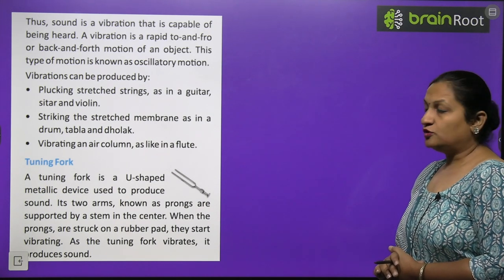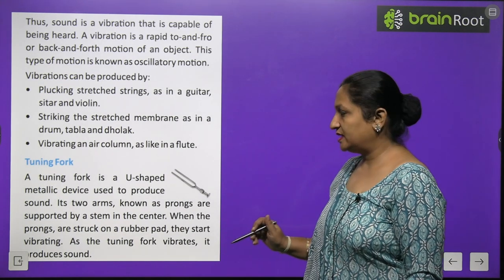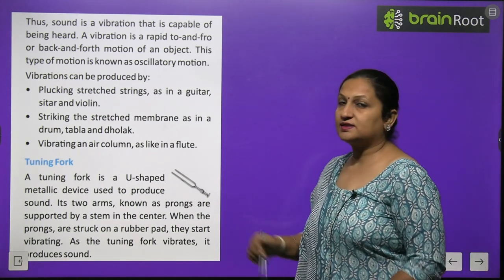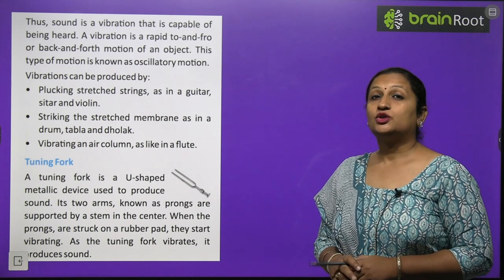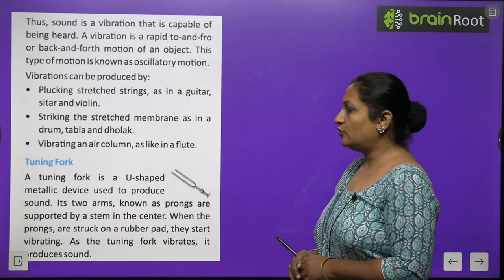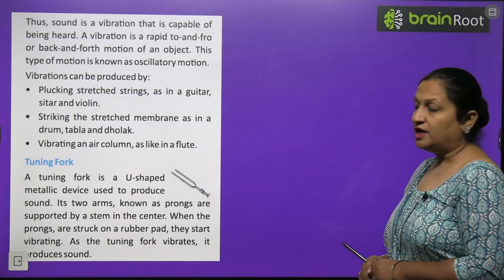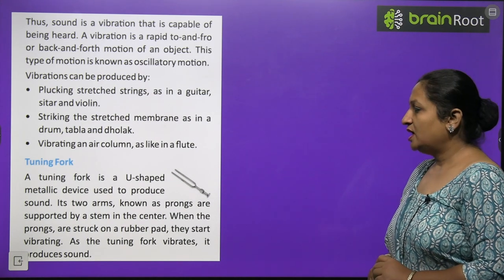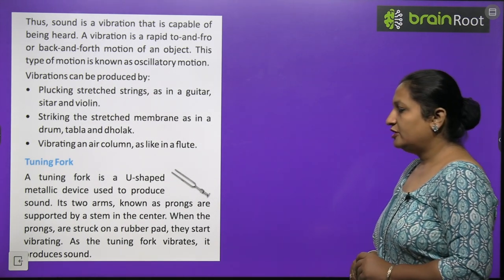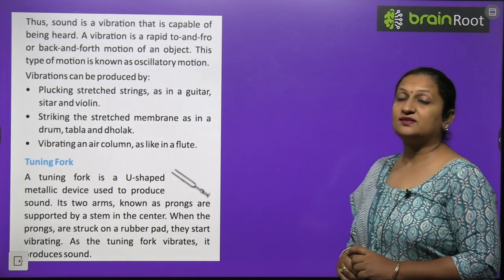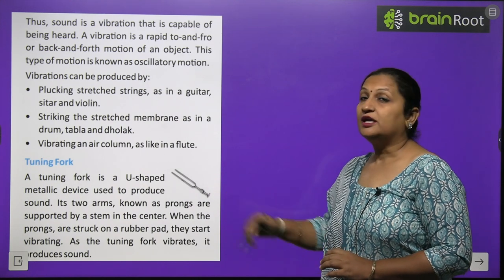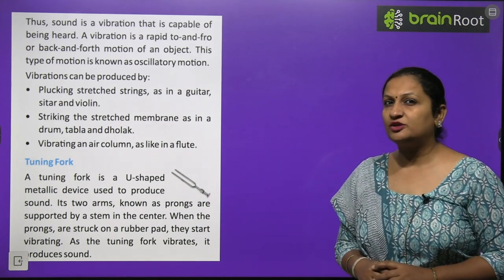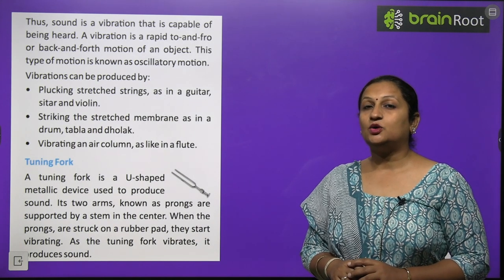Sound is a vibration that is capable of being heard. A vibration is a rapid to and fro or back and forth motion of an object. This type of motion is called oscillatory motion. When you plucked the ruler, it showed to and fro motion. This to and fro motion of an object is called oscillatory motion because it showed oscillations. Vibrations can be produced by plucking stretched strings as in guitars, sitar, and violin; striking the stretched membrane as in drum, tabla, and dholak; or vibrating an air column as in a flute.